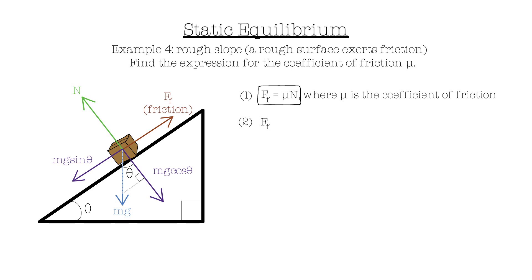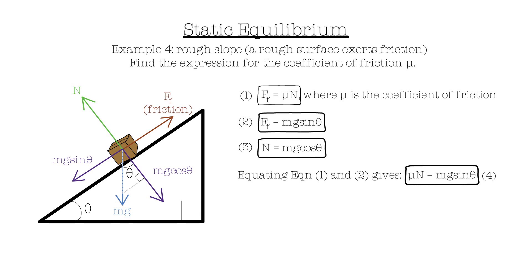Equations 2 and 3 are what you get when you resolve horizontally and vertically. By equating equations 1 and 2, we get our fourth equation, mu n equals mg sin theta.